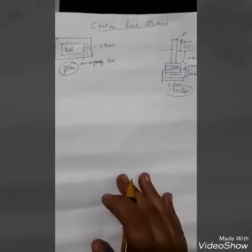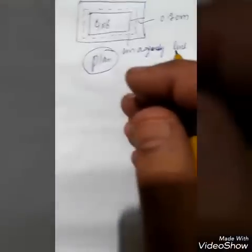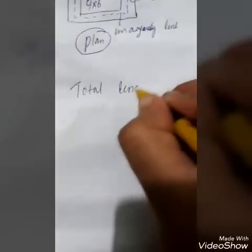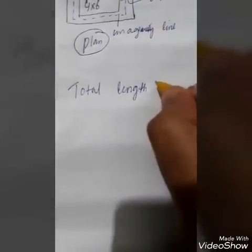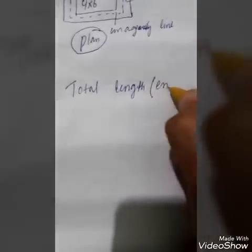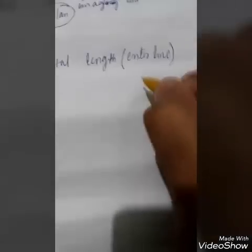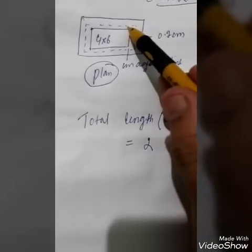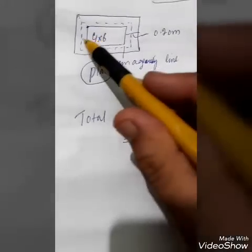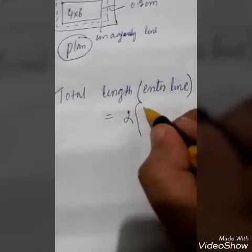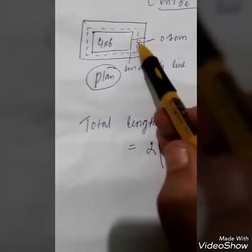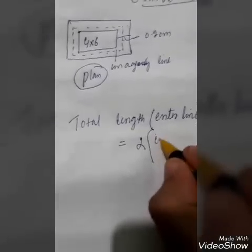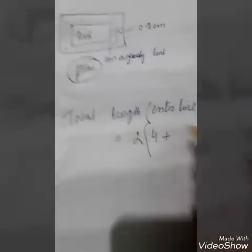Now let's find out the quantity. First, we find the total length of the centerline. The total length of the centerline — we have two long walls and two short walls, so it will be calculated twice. We first take the short wall: the short wall is four meters, and we will take twice the half of its width added to that dimension.